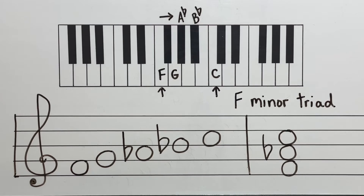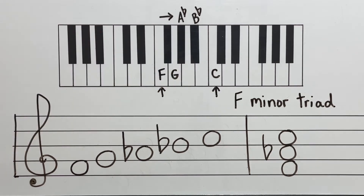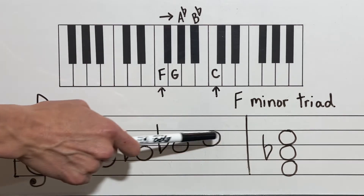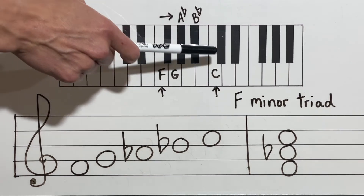The last triad I'm going to teach you today is F minor. Our F minor triad first starts on the piano where I have my F minor five finger pattern, with arrows on my root, my third, and my fifth. F is my root, A flat is my third, and C is my fifth. When I play an F minor triad, I'm playing F, A flat, and C at the exact same time. On the musical staff I have F, G, A flat, B flat, and C. I take my F, my A flat, and my C and make my stack — space, space, space — making sure I have my flat in front of my A.